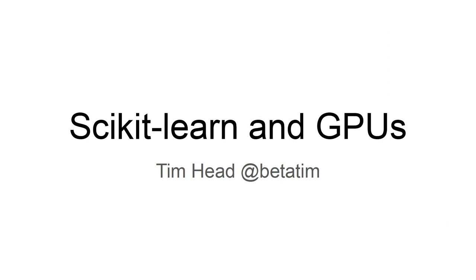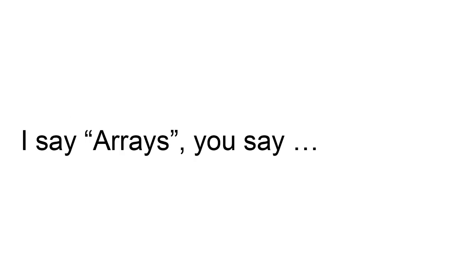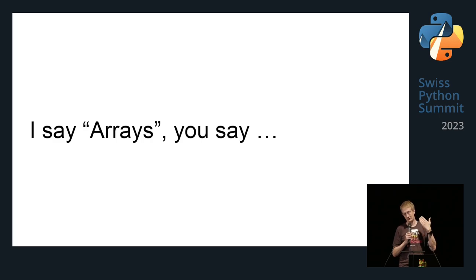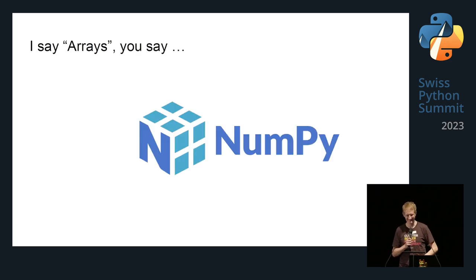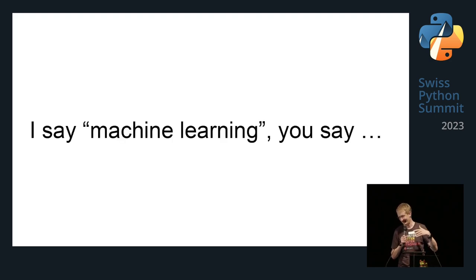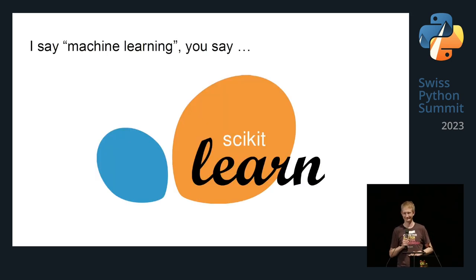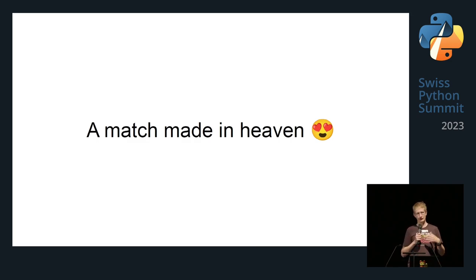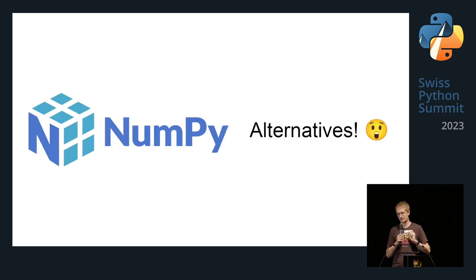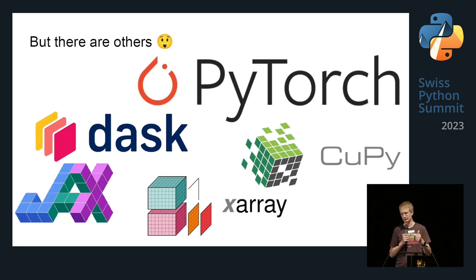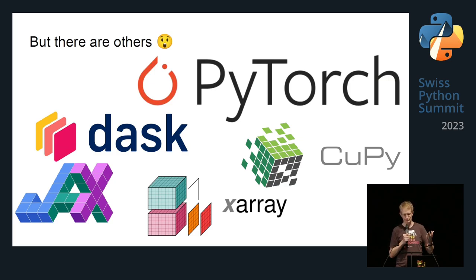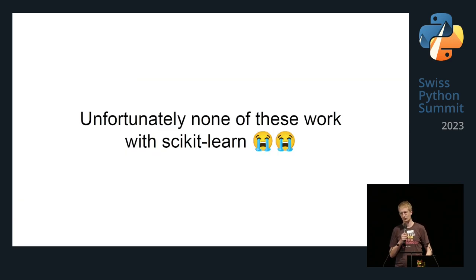Hi, I'm Tim and I work on scikit-learn, and I'm interested in GPUs. You're thinking of Python, you're thinking of arrays — NumPy of course. I say machine learning — you say scikit-learn, which if you ask a lot of people is a match made in heaven. However, it turns out there are alternatives to NumPy: for example PyTorch, CuPy, Dask, JAX, Xarray, and more. A cool thing about a lot of these libraries is they can take advantage of your GPU. But none of these work with scikit-learn — and that will make you sad.